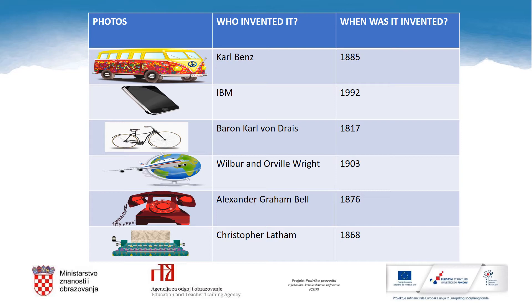The first smartphone was invented in 1992 by IBM and it was released in 1994 — it was called the Simon Personal Communicator. The first bicycle was invented in 1817 by German Baron Karl von Drais. It was constructed almost entirely from wood. The first successful plane was invented by the Wright Brothers in 1903.